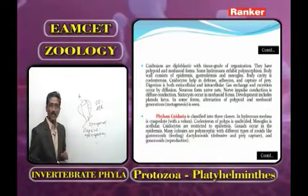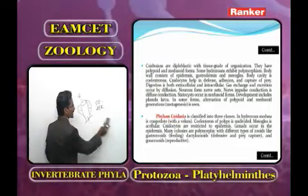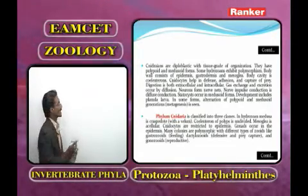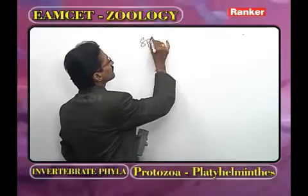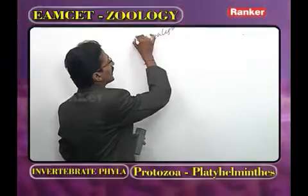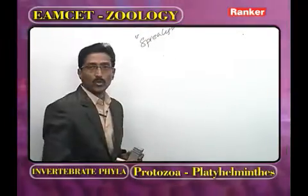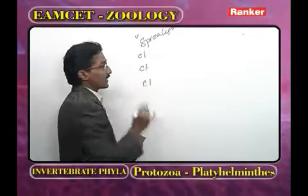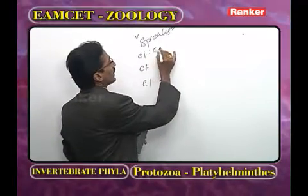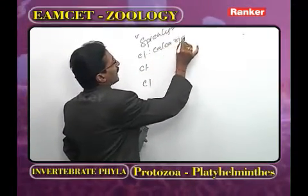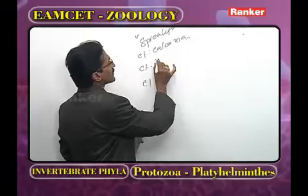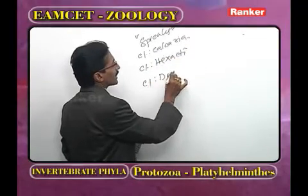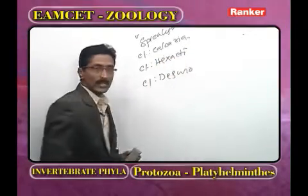Phylum Porifera is classified into three classes based on spicules. The first class is Calcarea, the second is Hexactinellida, and the third is Demospongiae.